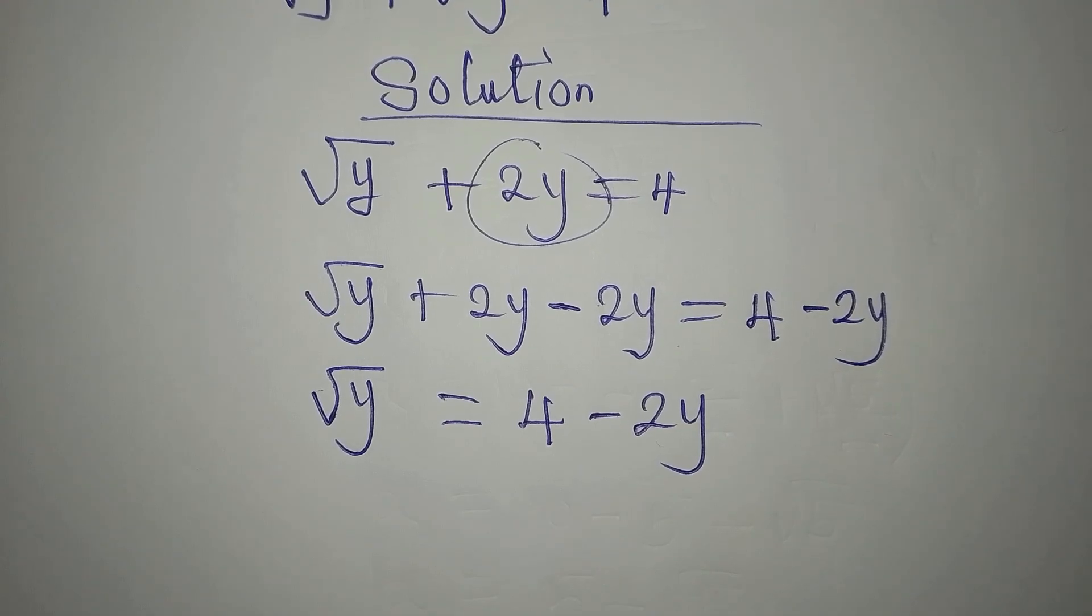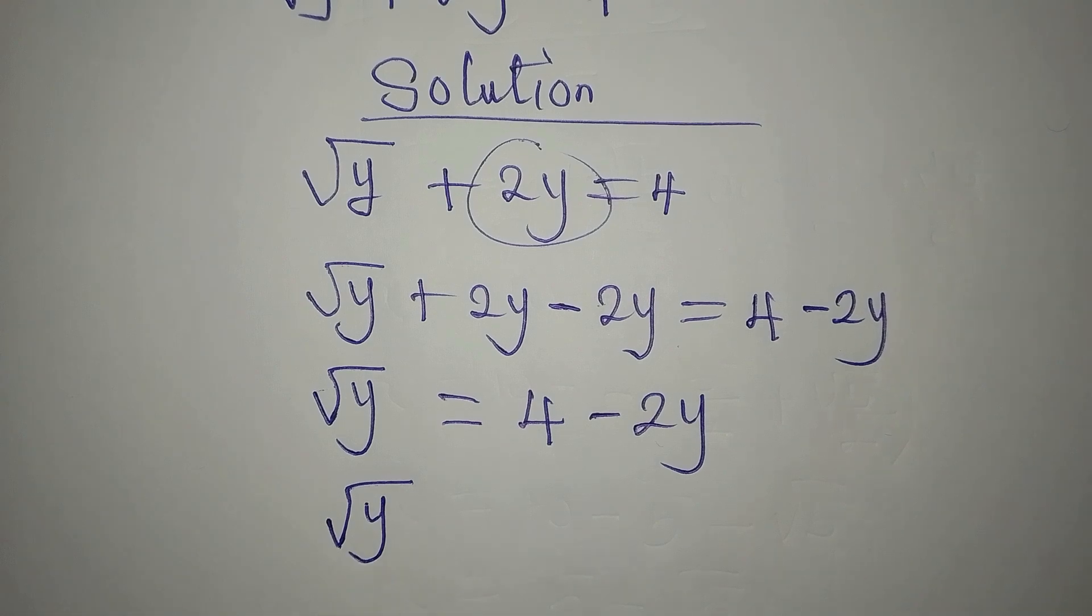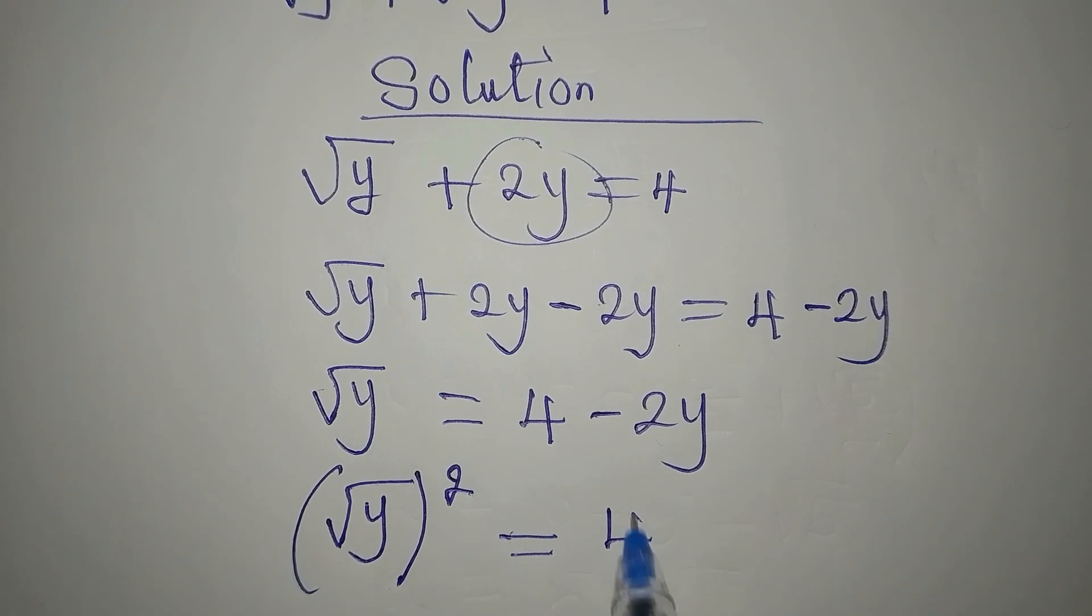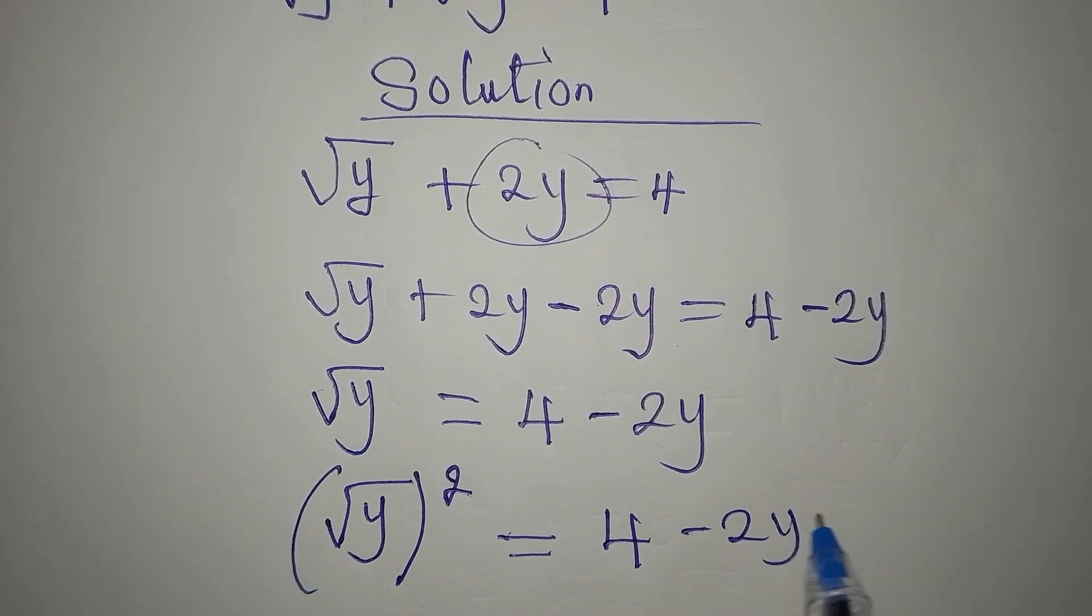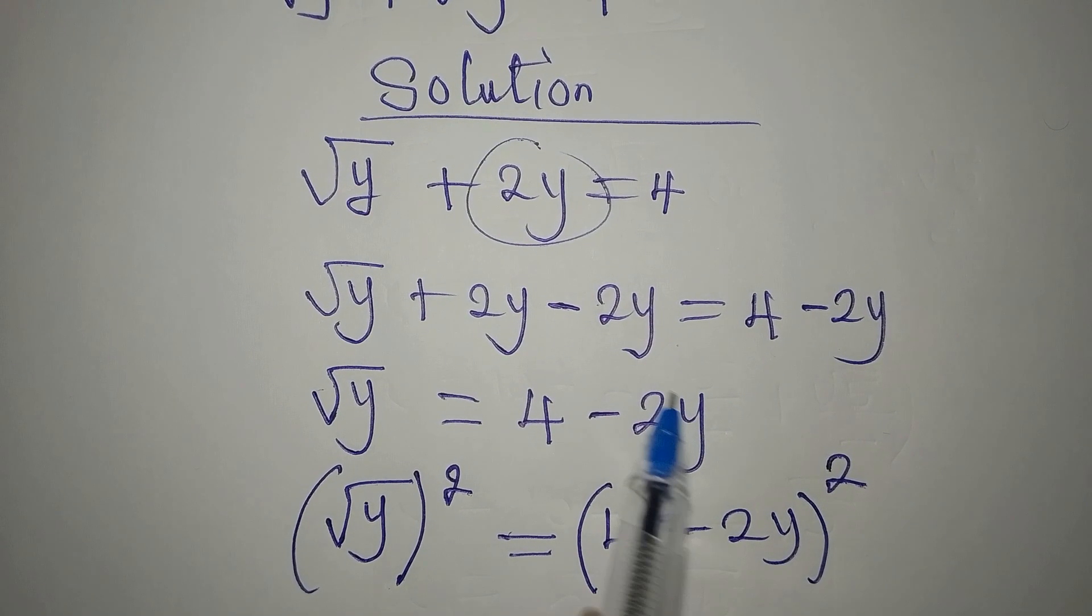Now the next target is to remove the square root from the left, and I can do that by squaring it. So that means that I would also square the right hand side, but you have to put this together and square it. If you square 4 separately and square 2y separately, you're going to be wrong.